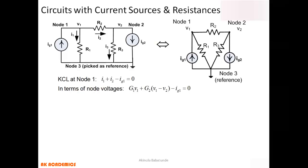Taking KCL at Node 1: we use the convention that current entering a node gets a negative sign, and current leaving a node gets a positive sign. Currents i1 and i2 are both leaving Node 1, so they get positive signs. The only current entering Node 1 is ig1, so it gets a negative sign. Therefore: i1 + i2 - ig1 = 0, because the summation of all currents at a node must equal zero.